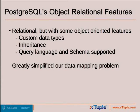One really neat thing about the fact that we happen to already be using Postgres is that it's relational but already has some object-oriented features — it's had these since the beginning. It supports custom data types, object inheritance, and the query language and schema support these things. Because it does these things, this greatly simplifies our mapping problem.